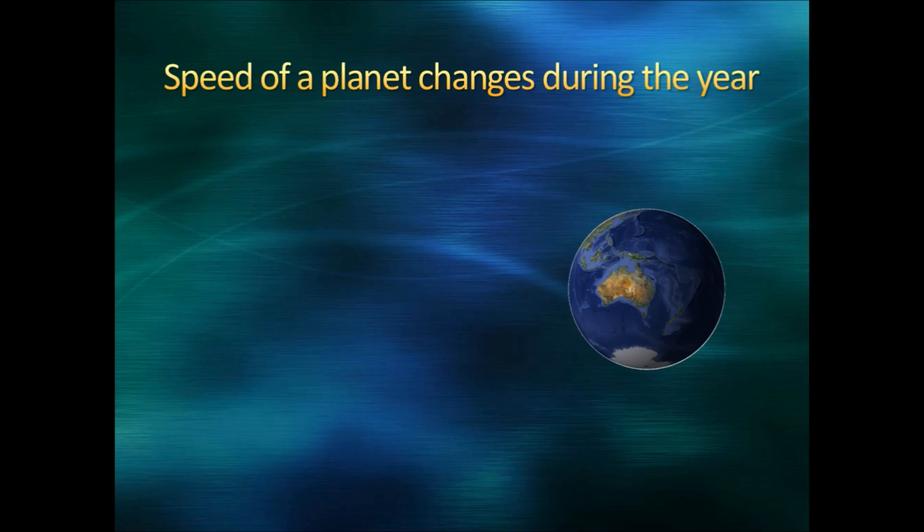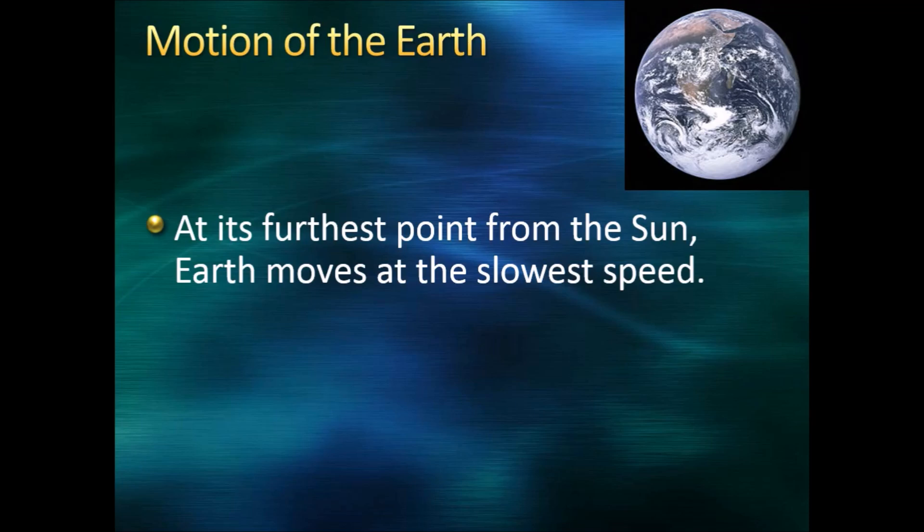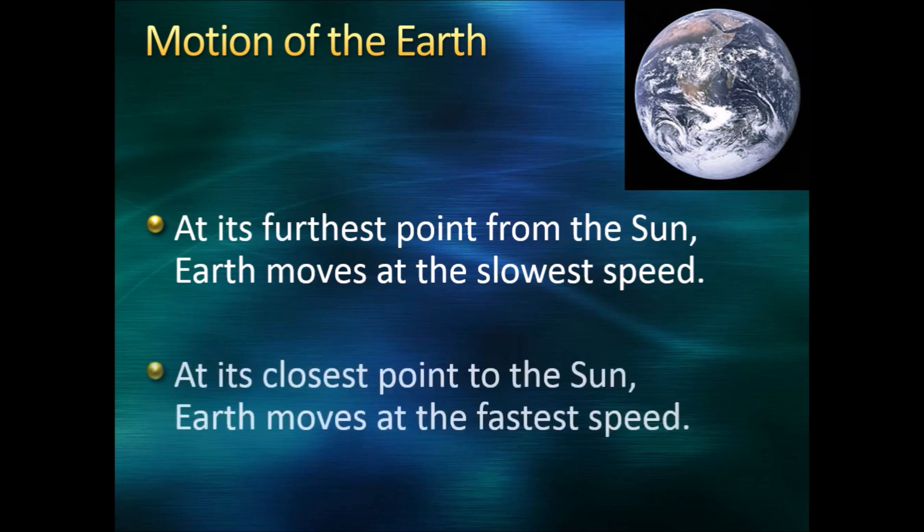Consider the orbit of the Earth. It takes one year for Earth to complete a revolution around the sun. Before Kepler came along, people thought that Earth moved through space at a constant speed. It turns out that the speed of any planet changes during the year.